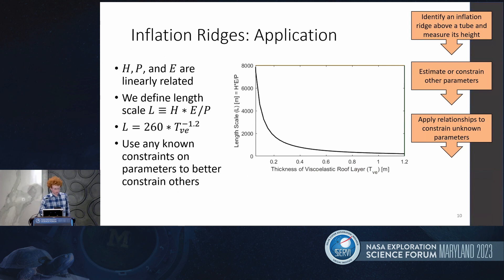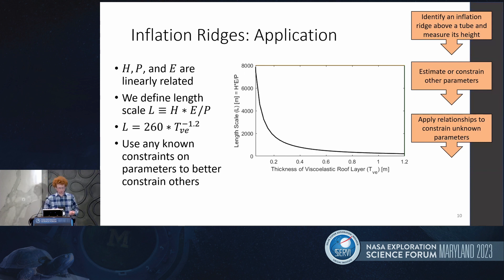These are the relationships I found between these parameters. I found that the ridge height, pressure, and rock strength are all linearly related, so I defined a length scale to combine all of them. That length scale is related by a specific function to the effective roof thickness, as expressed on the right. Using these relationships, you can apply constraints on any of these parameters to better constrain the others.